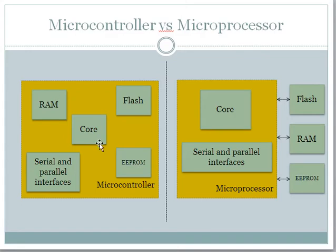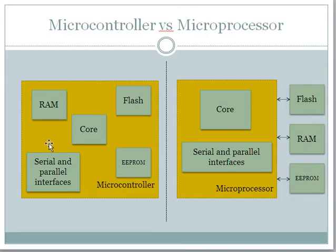The difference between a microcontroller and a microprocessor can be explained using two block diagrams. Both have a core — which is the CPU where all processing happens — but the major difference is in memory: a microprocessor has an external memory interface, whereas a microcontroller has inbuilt memory on the chip itself. Serial and parallel interfaces used for communication are common across both.